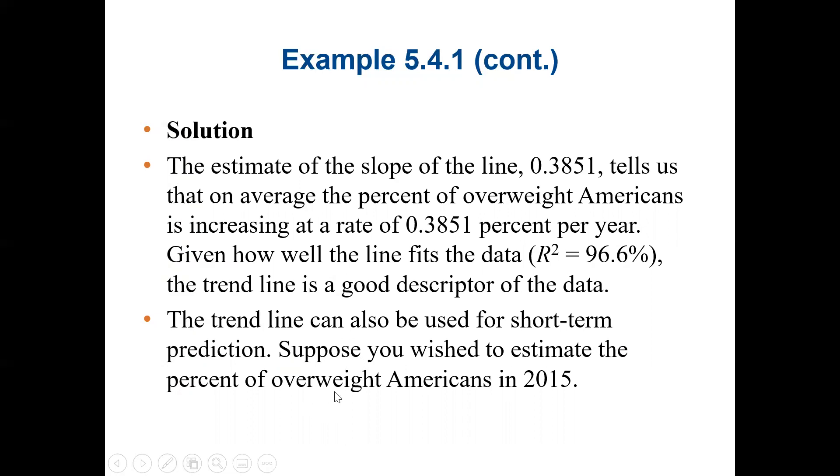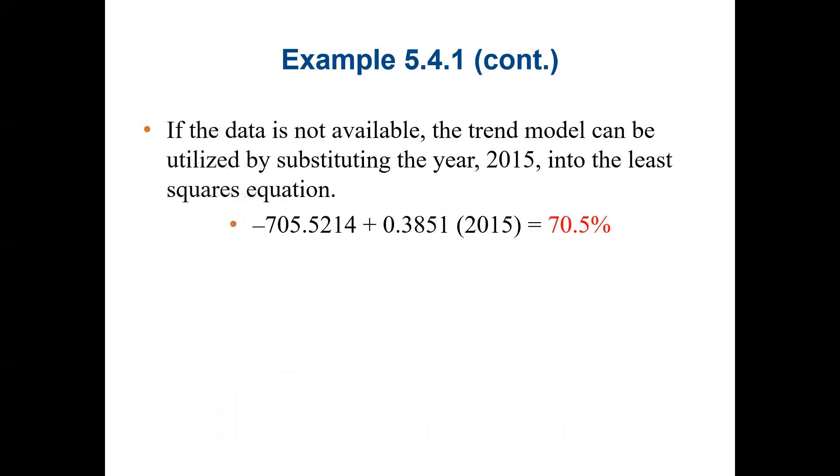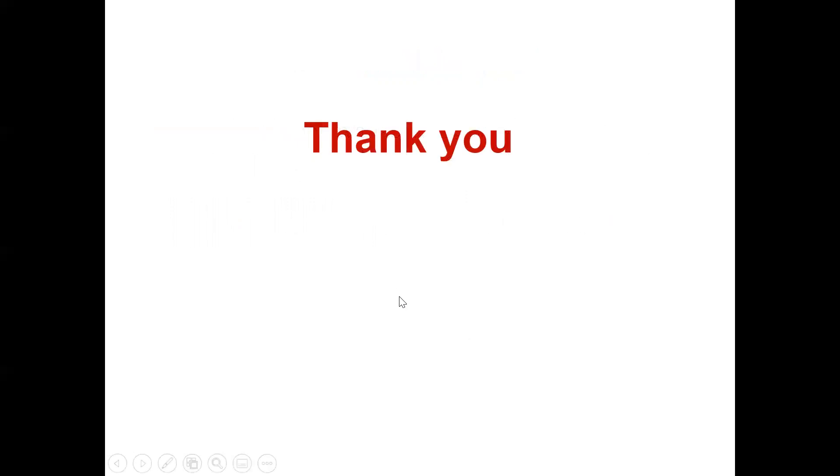The trend line can also be used for short-term prediction. Suppose we wish to estimate the percent of overweight Americans in 2015. We plug in 2015 as our independent variable. We already generated a regression equation. If we plug it in the equation, we can find the percent in time. Here, this is our y-intercept. The slope is 0.3851. We plug in 2015. This tells us by 2015, 70.5% of Americans will be overweight.